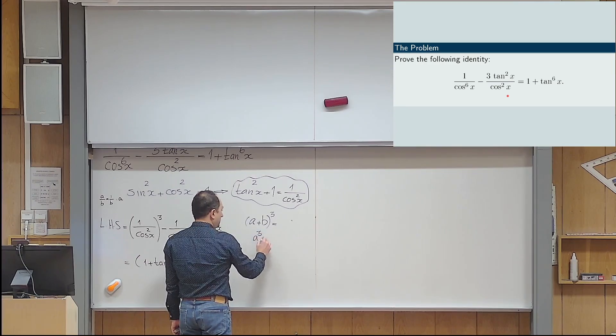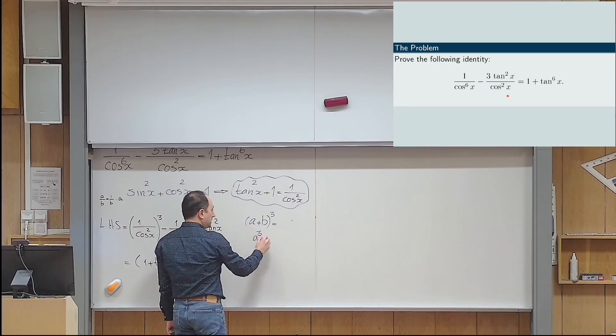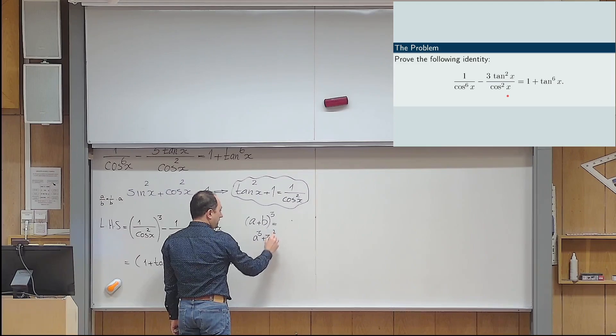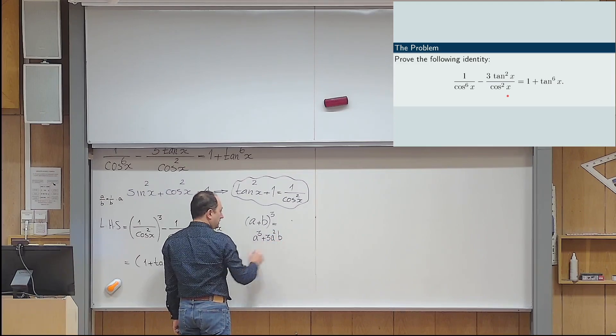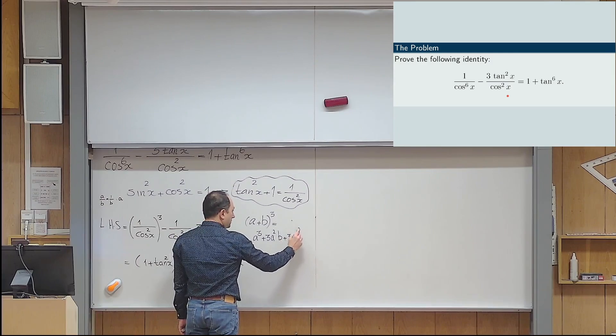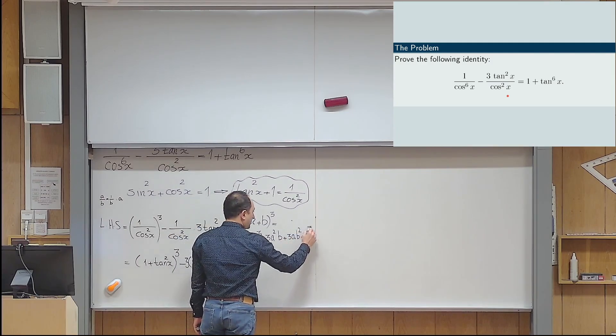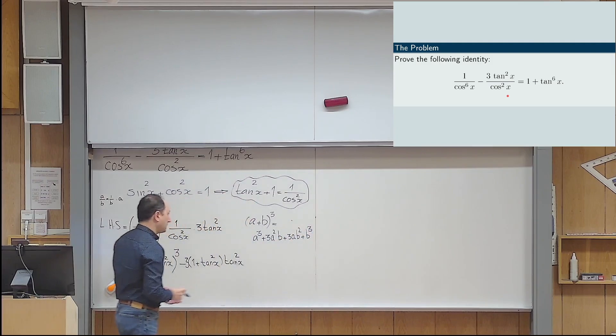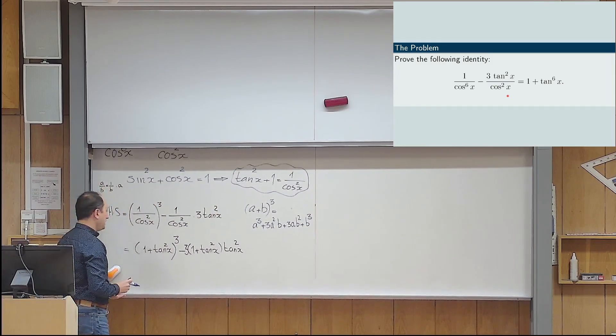And so, this is the formula. So, this becomes a to the 3, the first one cubed, 3 times the first one squared, the second one, plus 3 times the first one, times the second one squared, and then plus the last one cubed, the second one cubed. So, I will do the same thing here.